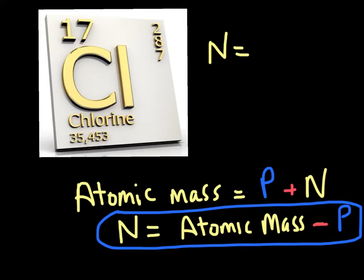Instead of writing 35.453, because that's a lot of math, what I'm going to do is I'm just going to take the first two numbers, 35, and I'm going to subtract the number of protons. And the number of protons is the same as the atomic number, which is 17 right here. So 35 minus 17.